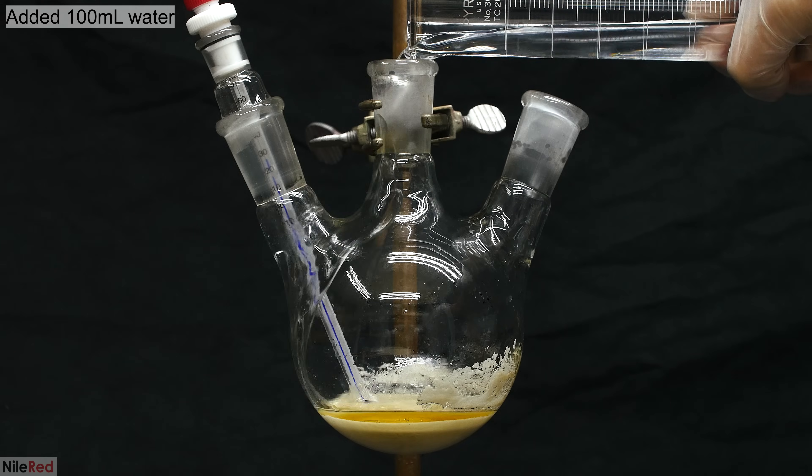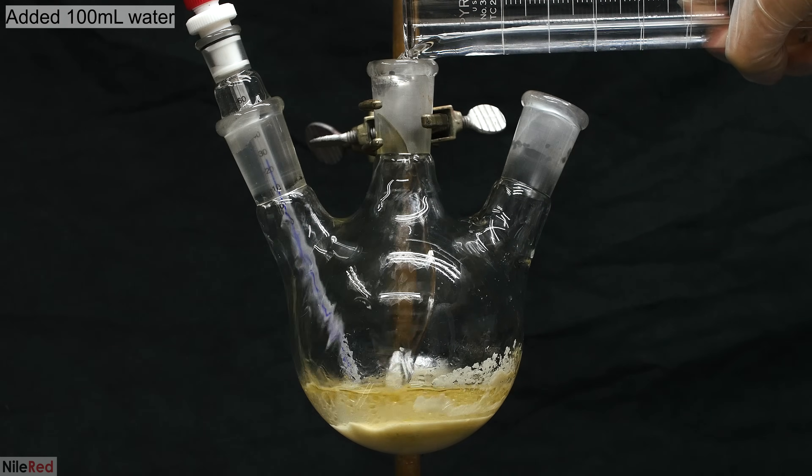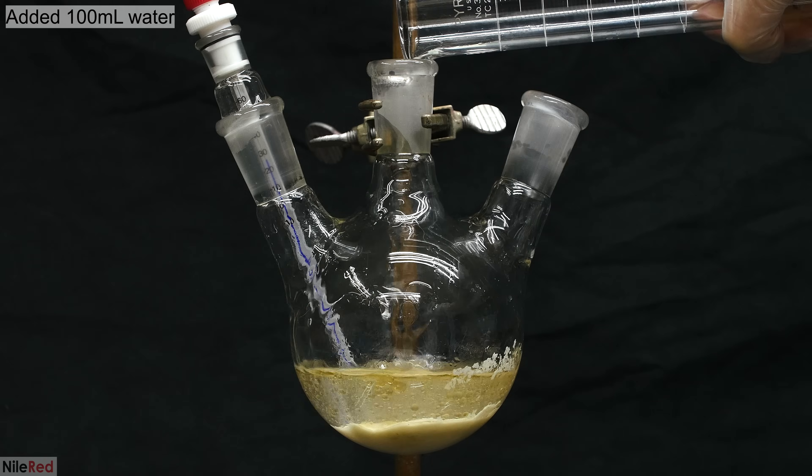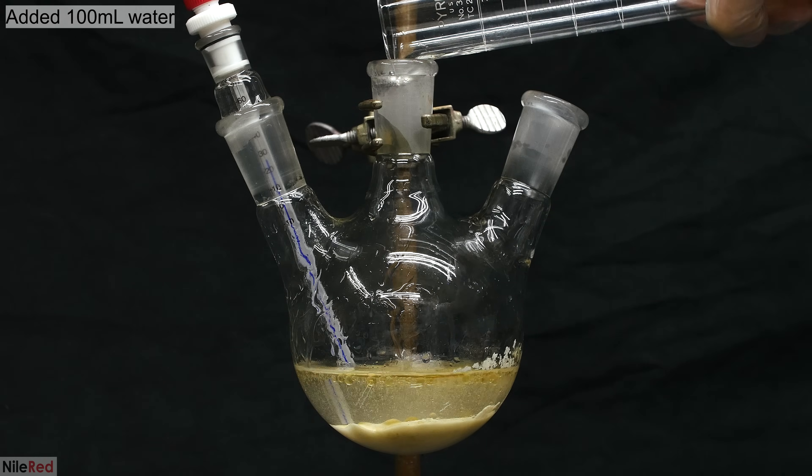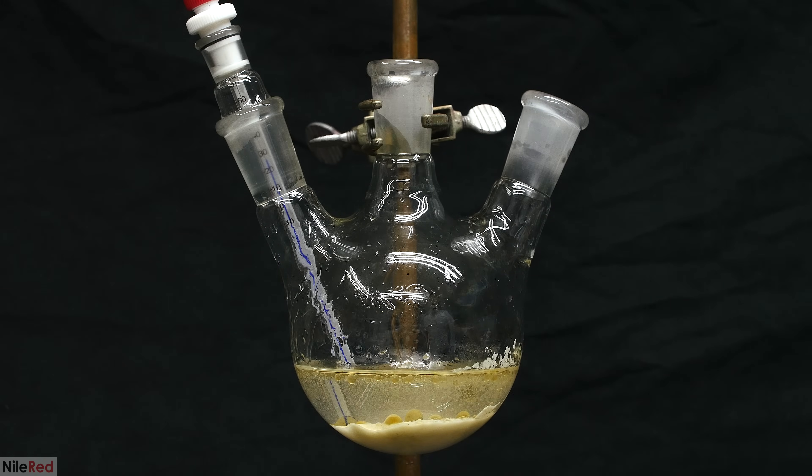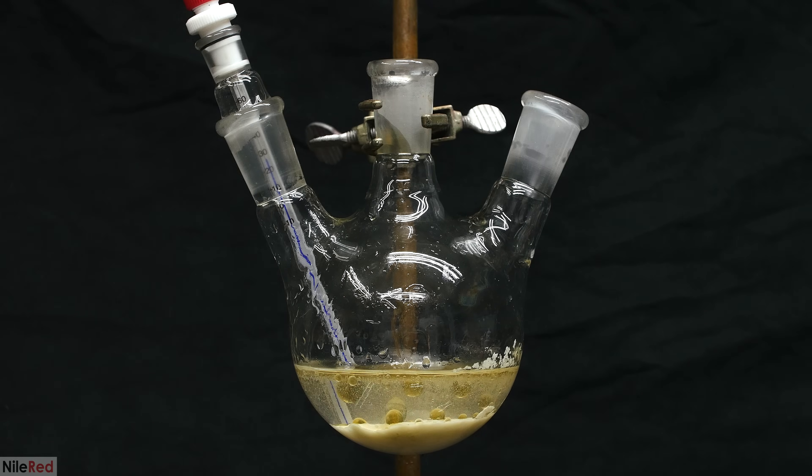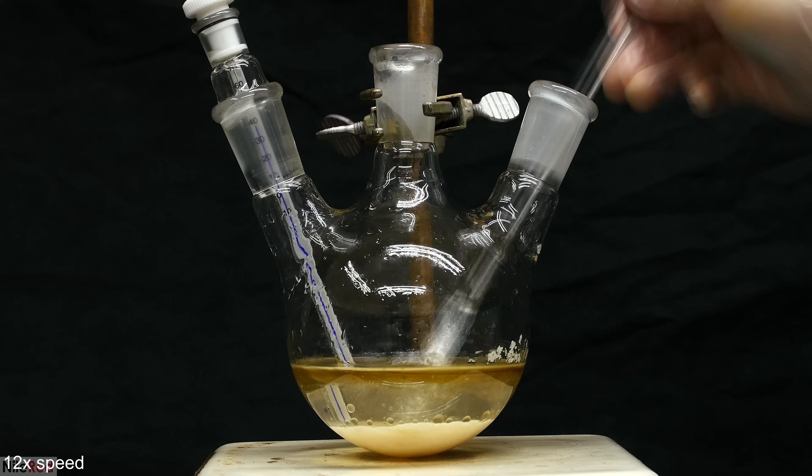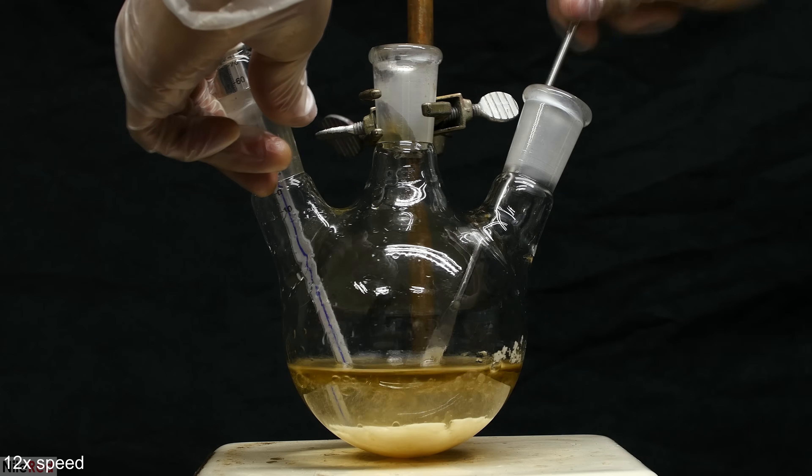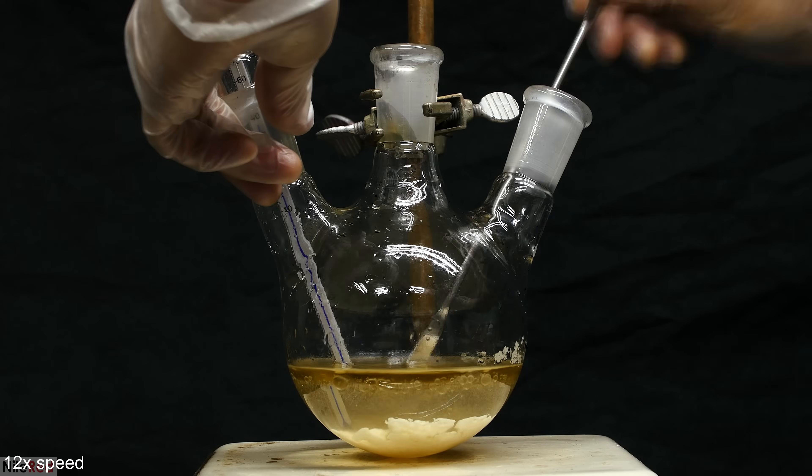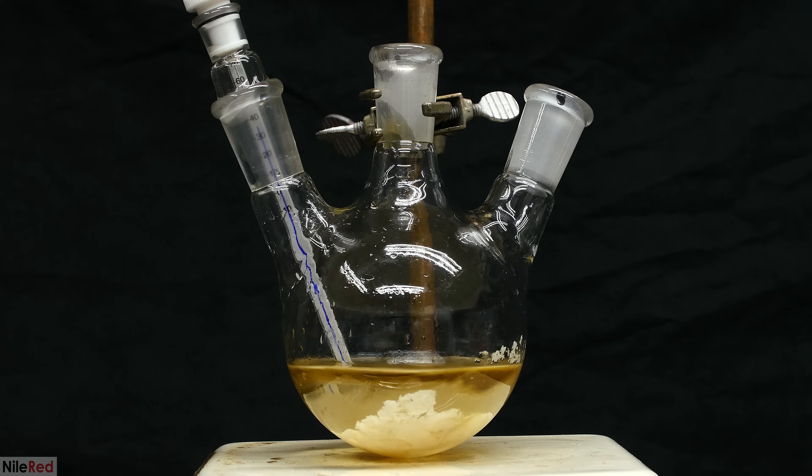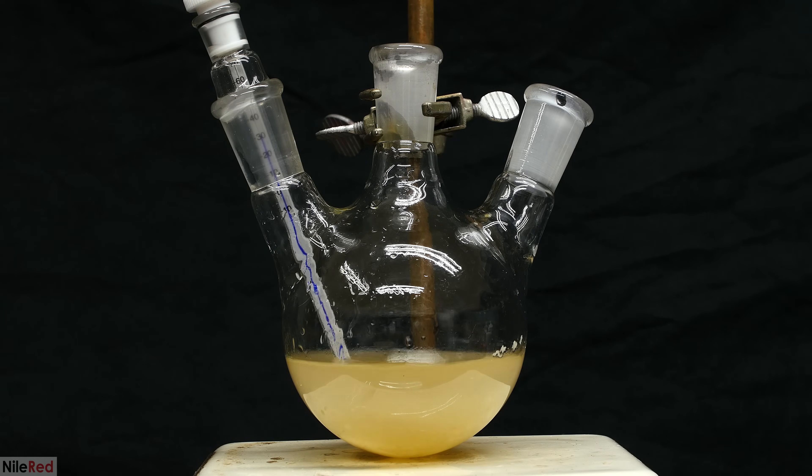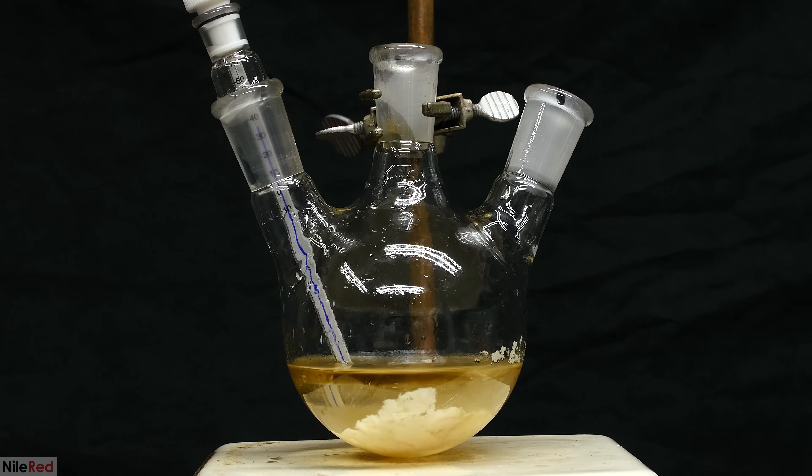I allowed it to cool down a little bit, and then I added 100 milliliters of water. The density of anisole is less than that of water, so as I add the water, you can see the anisole floating to the top. The salt at the bottom is pretty tough, so I use a metal spatula to break it up into pieces. Once I break up the cake at the bottom, my stir bar starts to work again, so I turn on the stirring and I let things mix until all of the salt has dissolved.